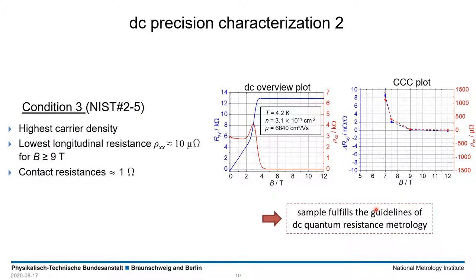The third condition was at an even higher carrier density, resulting in R_XX values around 10 µΩ starting at 9 tesla. At these flux densities, the device fulfills the requirements of the guidelines of DC quantum resistance metrology, and these conditions are also used for the AC measurements that follow in the next slides.